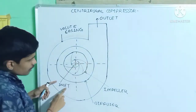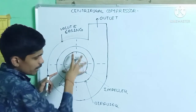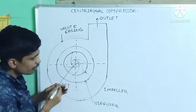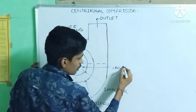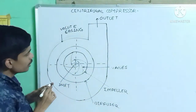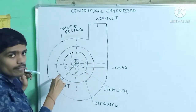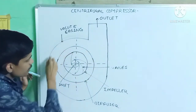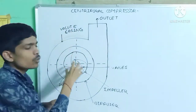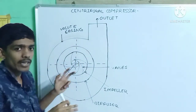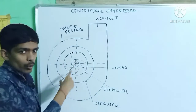It consists mainly of an inlet at the middle, an impeller upon which curved vanes are symmetrically mounted, a diffuser which is generally a vaneless pipe, and a volute casing with an outlet. The volute casing is an airtight casing so that air cannot enter inside.